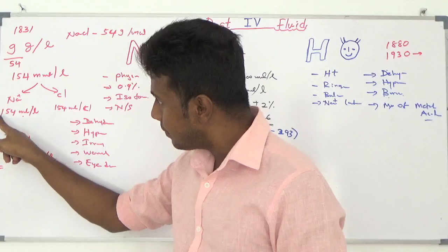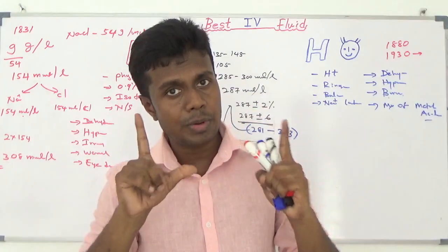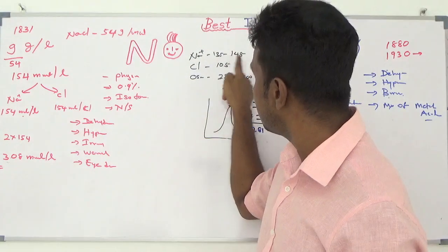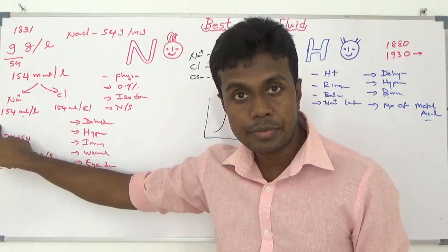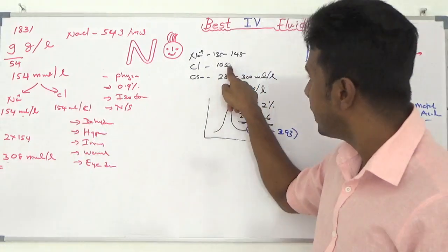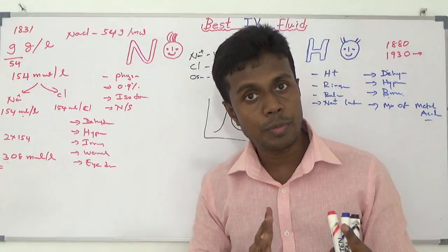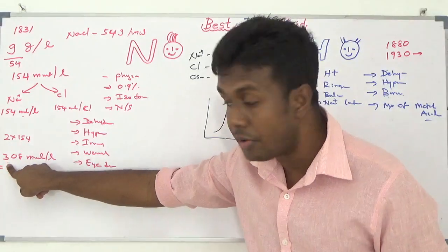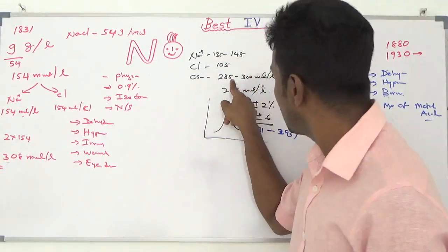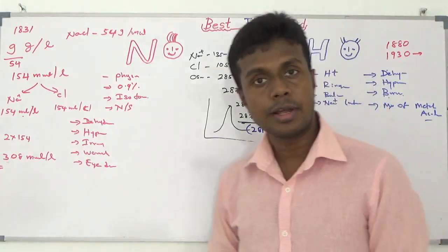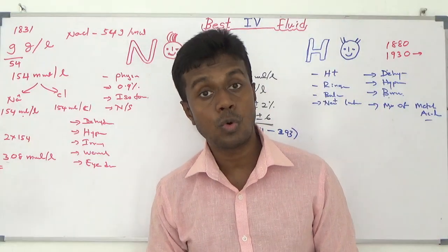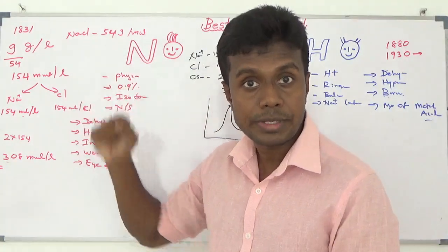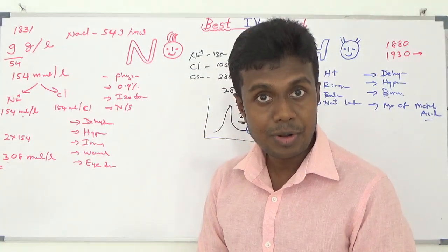When coming to normal saline, even though we call it normal saline, the sodium content is not normal — here it is 154, whereas normal body sodium is 135 to 145. Chloride content is 154 here, but 105 in the body — that is also not normal. Osmolality is 308 here versus 285 to 300 in the body. All are abnormal — so this should really be called abnormal saline, not normal saline.